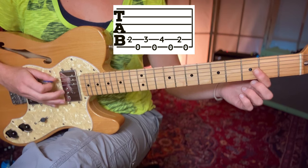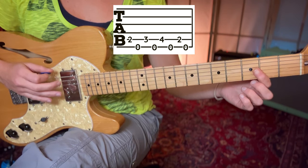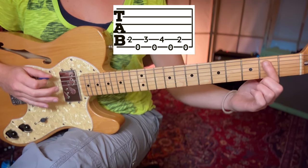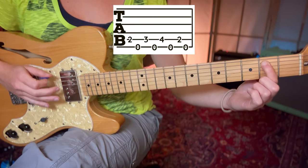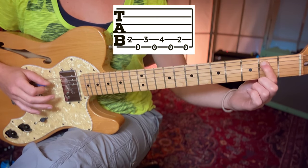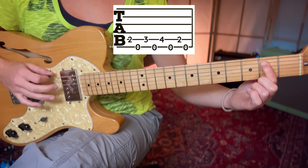We alternate between the A string and the E string with our pick. The index finger plays the second fret of the A string and then the pick plays the open E string.